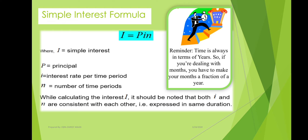The simple interest formula: capital I stands for simple interest, capital P stands for principal, small i stands for interest rate per time period, and small n for number of time periods. Small i and n must be consistent, meaning both must be expressed in the same units. Time is always in terms of years, so if dealing with months, convert them to a fraction of a year.